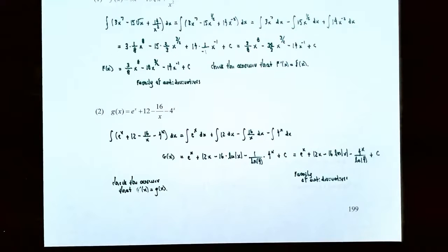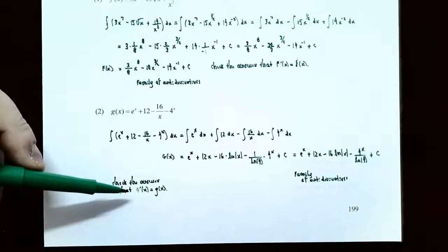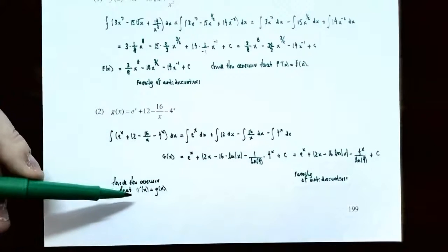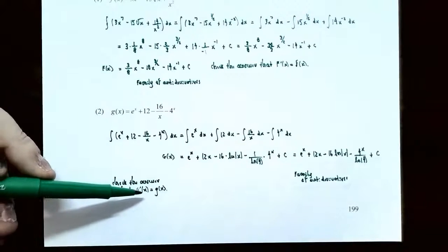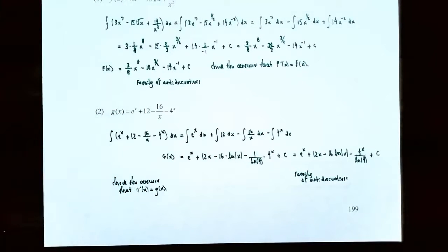Simplifying, the family of antiderivatives is G(x) = e^x + 12x − 16 ln|x| − 4^x/ln(4) + C. To check your answer, verify that G′(x) equals the original function g(x).